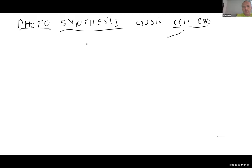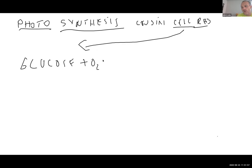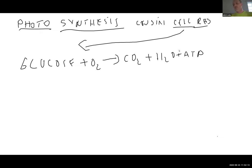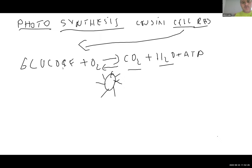When we did cell respiration, we used glucose plus oxygen and we ended up with carbon dioxide plus water plus ATP. Now in the case of photosynthesis, we're just going to do the reverse. We use carbon dioxide plus water, get the energy from the sun, and turn it into glucose. And as a byproduct, we get oxygen. That's why I call them cousins — they're related. This is cell respiration; at the bottom, it's photosynthesis.